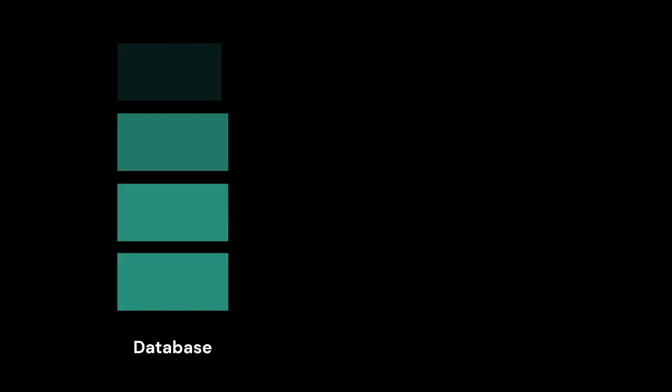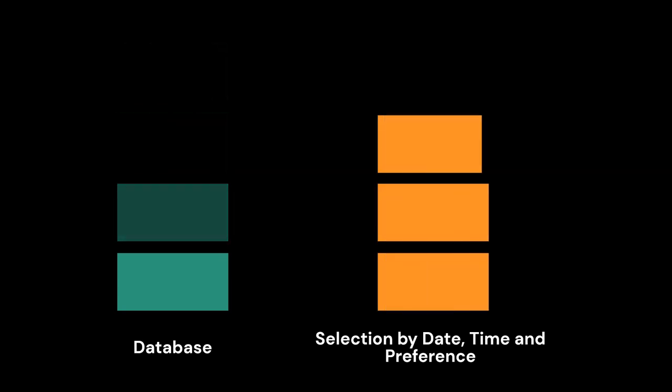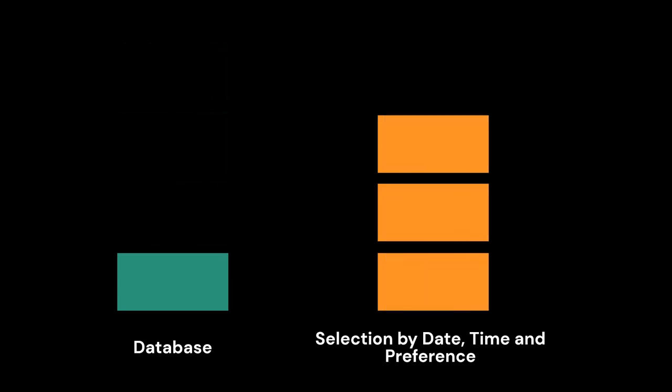Step 2. When the waitlist opens, SNRHA will key in the pre-applications and build the database of applicants. After the waitlist closes, SNRHA will select applicants from the waiting list based on date, time, and preference.